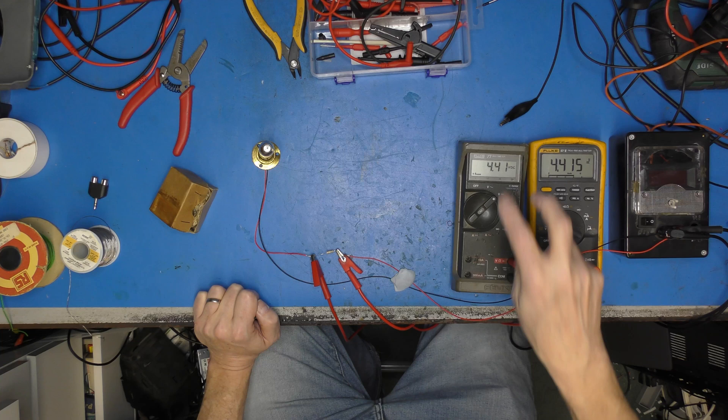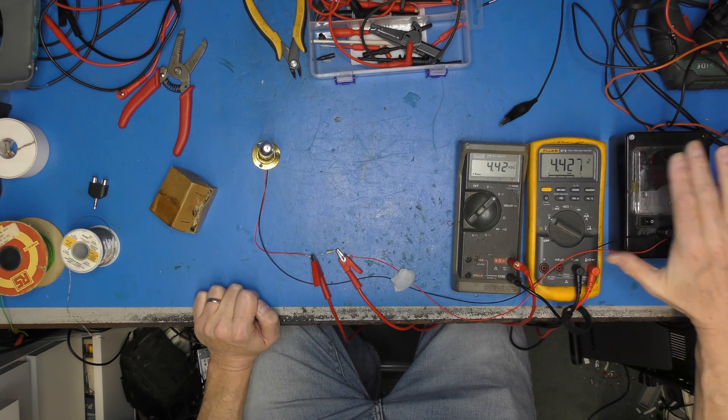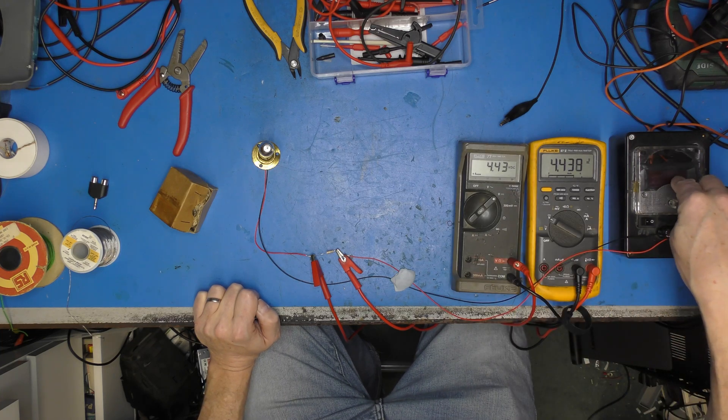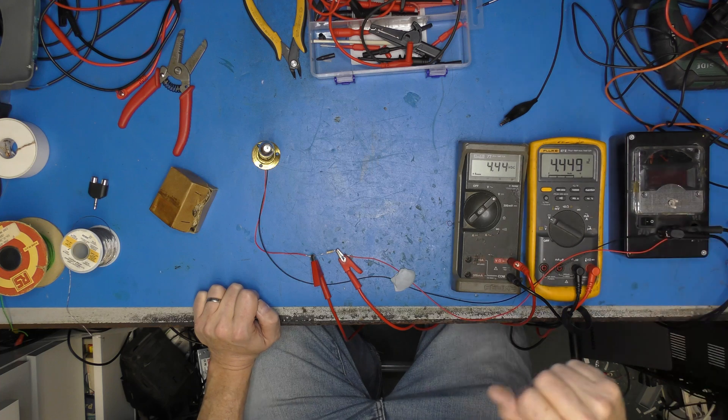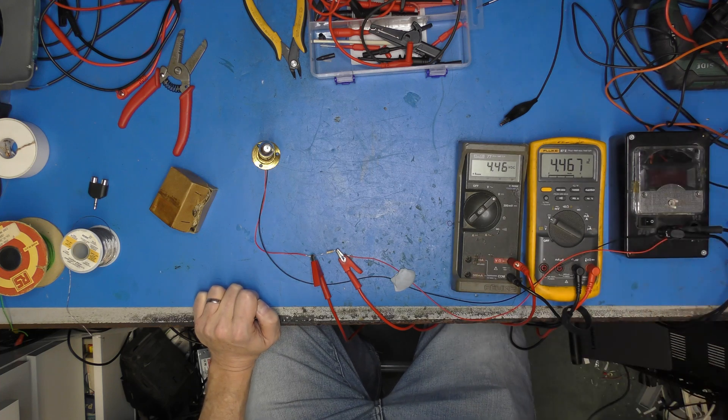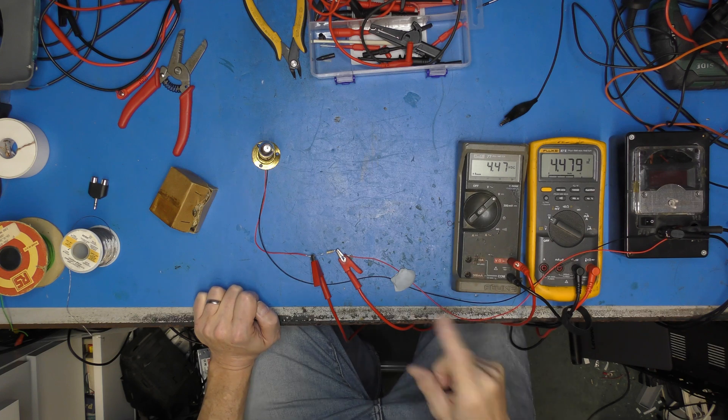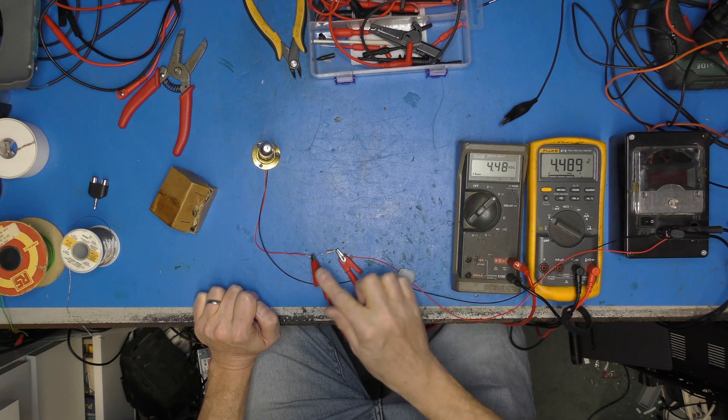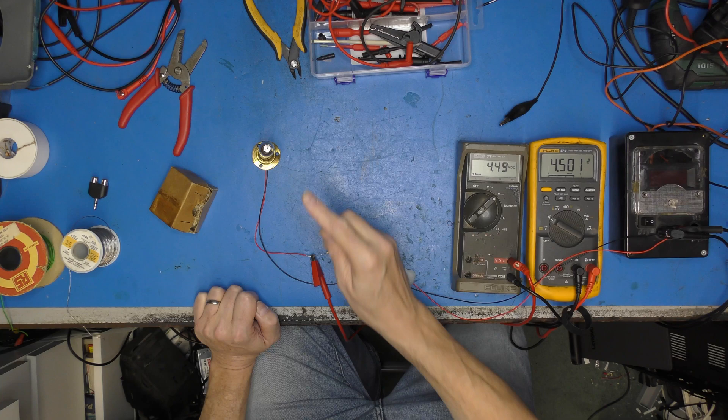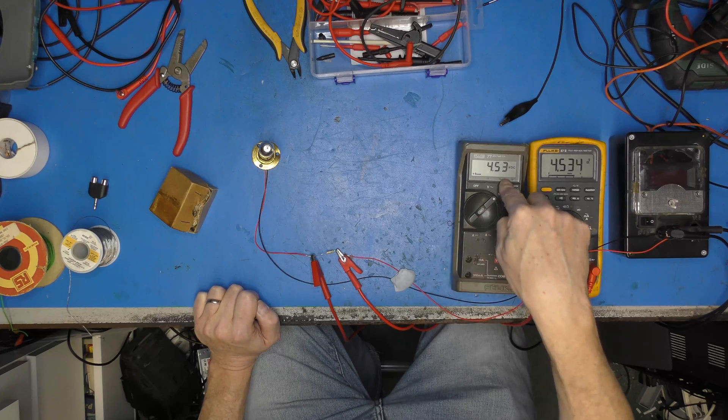As you can see we've got about four and a half volts on there at the moment. It's connected to the capacitor reformer because I just needed a high voltage DC power supply and it happens to have one in there. So what should happen is the voltage should rise across our resistor until the neon lamp strikes and lights up, at which point the voltage on its output should be around about 160 volts according to the data sheet.